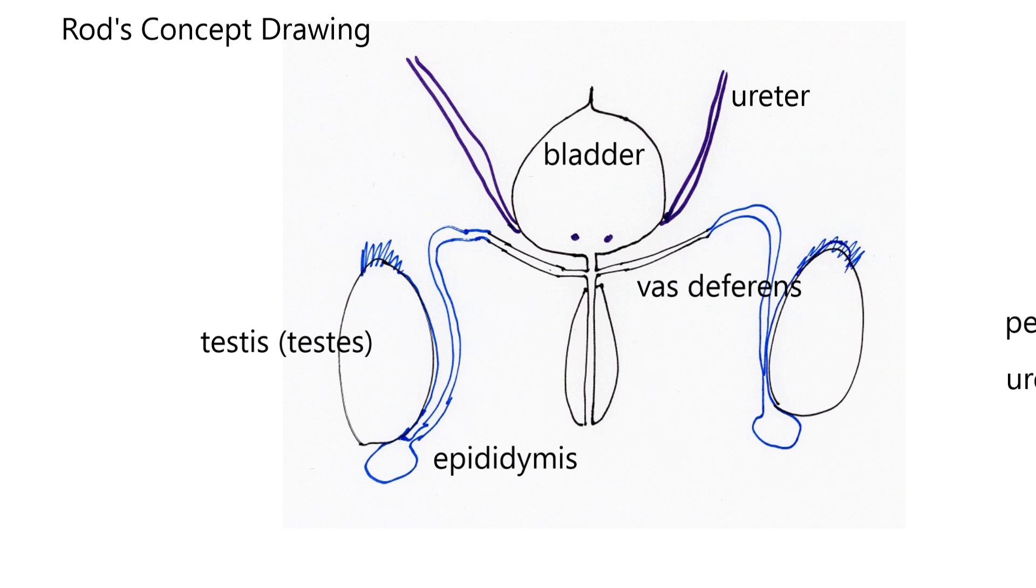Then we have the vas deferens. The vas deferens is where the epididymis ends, and then this tube carries sperm to this part, that's all the vas deferens. If you've heard of an animal or a person having a vasectomy, this is the structure that's cut because then you prevent sperm from traveling from where they're made to leaving the body.